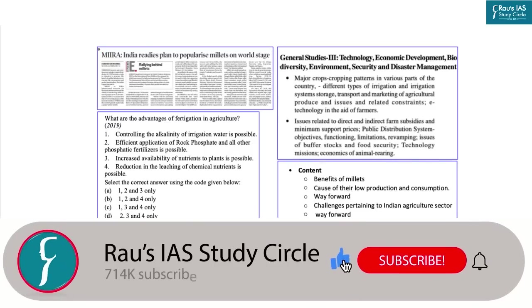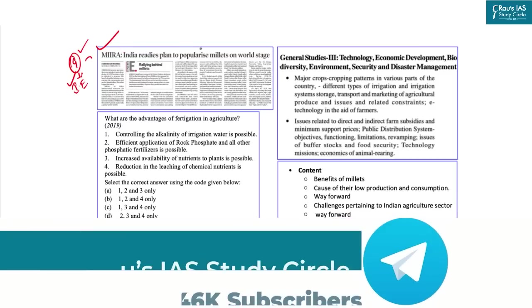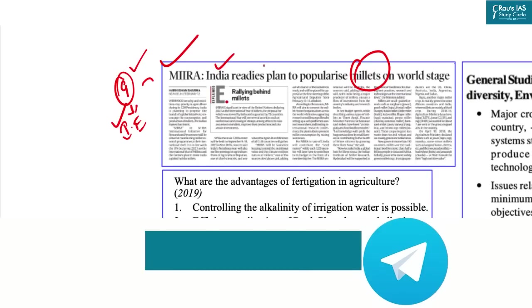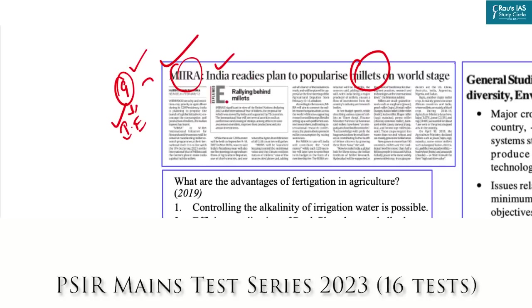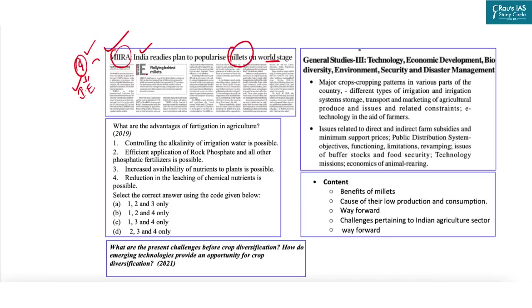Let's start with the first article, which appeared on page number 9 in the Indian Express dated 13th February. This article is about the importance of millets. The context is that India is planning to launch a global initiative — MIRA, that is Millet International Initiative for Research and Awareness — to encourage the consumption and production of millets and coordinate millet research at the international level.